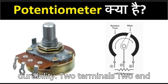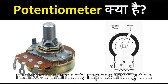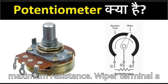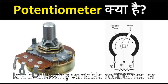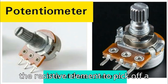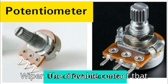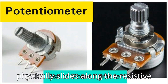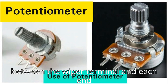Second, terminals. There are two end terminals connected to either end of the resistive element, representing the maximum resistance. The wiper terminal is a movable contact connected to a slider or knob, allowing variable resistance or voltage division. The wiper slides along the resistive element to pick off a specific resistance value.